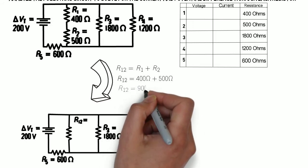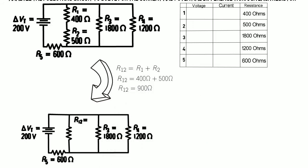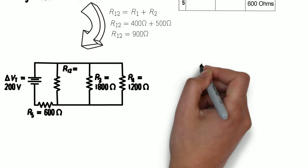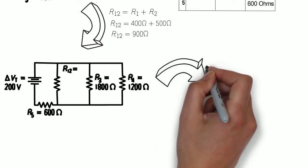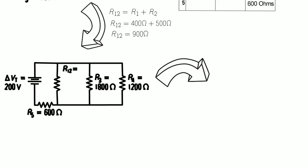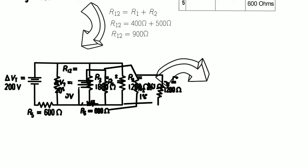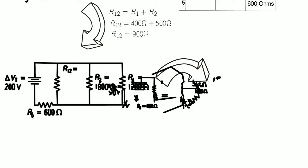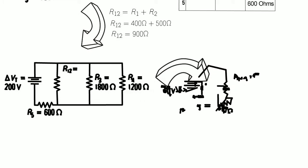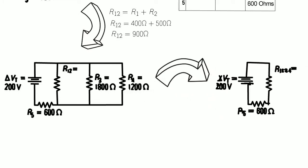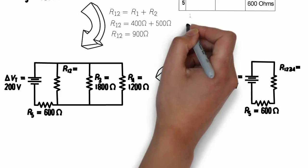This gives us a circuit which is still a mixed circuit. We have both resistors in parallel and in series. But we can simplify it again by looking at the fact that R12, R3, and R4 are all in parallel.